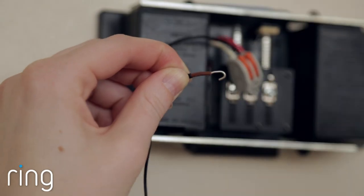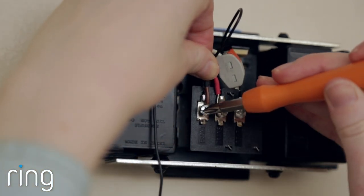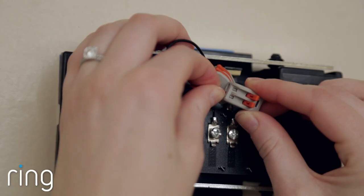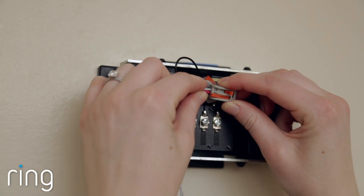Finally, take the other end of this wire and connect it to the front terminal on your doorbell and tighten the screw. Now repeat this process for the other wire on the Pro Power Kit and the transformer wire on your doorbell.